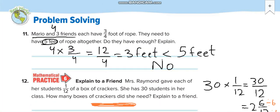Okay, this one now. Mario and three friends, so total four persons, each have three-fourths foot of rope. So they need to have five feet of rope all together. Do they have enough? So we'll multiply 4 by 3 over 4. 4 times 3, 12 over 4. How many groups of 4 we can take out of 12? 3 and nothing remainder. So three whole, three feet, which is less than five feet. No, they will not have five feet of rope.